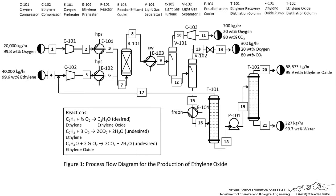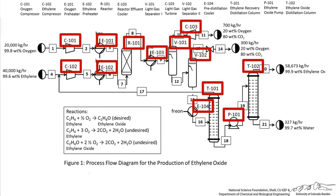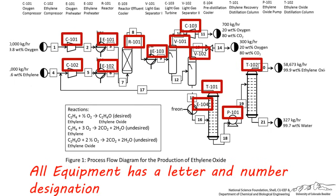You may have noticed that next to each piece of equipment, there's a unique letter, followed by a dash and a three-digit number designation. This is because, for identification purposes, each piece of equipment is given a letter and number.